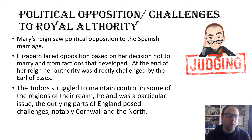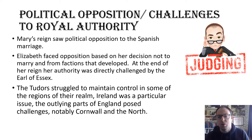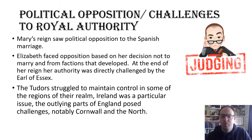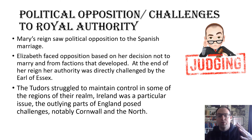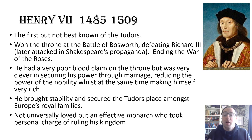Throughout this period the Tudors struggled to maintain control of some regions of their realm. Notable areas include Ireland, which was a particular issue, and outlying parts of England such as Cornwall and the north, which posed particular difficulties for the various Tudor monarchs. In the heartlands near the capital, the Tudor grasp on power tended to be fairly strong, but if you went west or north that control was less strong and the levels of discontent were higher as well.